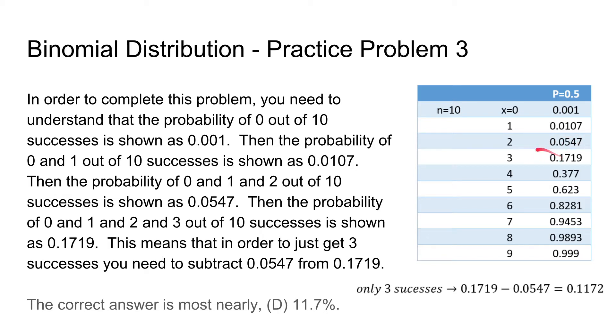Following that, 0, 1, 2, or 3 successes of 0.1719. But this problem asks for what is the probability of only three successes. So in order to do that, we take the difference between this value, which includes 0, 1, 2, or 3 successes,